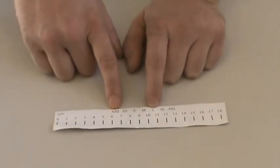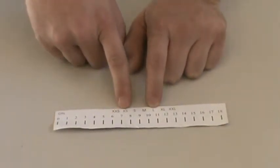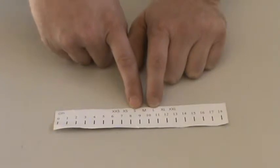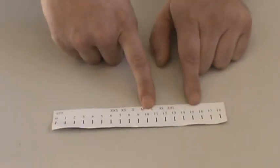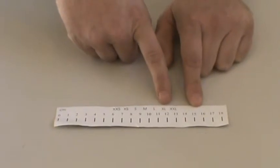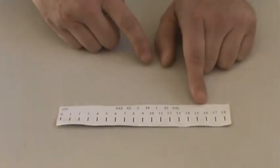6-7 cm is an extra extra small. 7-8 cm is an extra small. 8-9 cm is a small. 9-10 cm is a medium. 10-11 cm is a large. 11-12 cm is an extra large. And then 12-13 cm is an extra extra large.